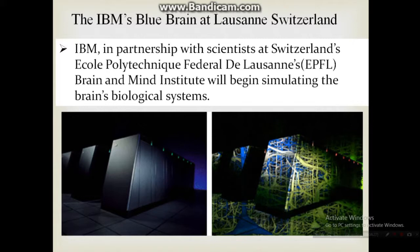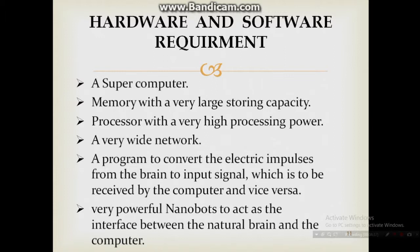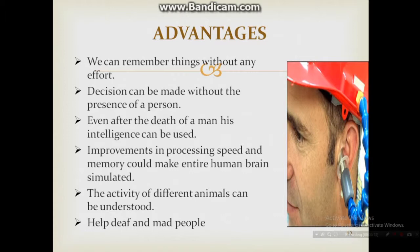IBM is creating Blue Brain technology using supercomputers. Hardware and software requirements for creating a Blue Brain include: a supercomputer, memory with large storing capacity, a processor with very high processing power, a very wide network, and powerful nanobots to act as the interface between the natural brain and the computer.